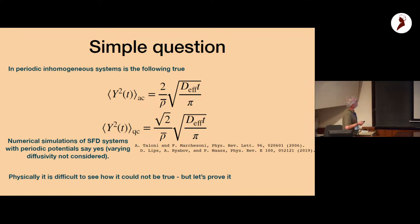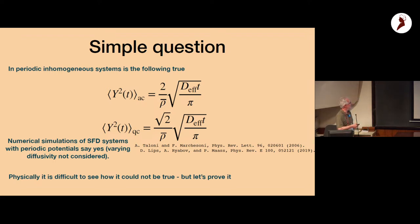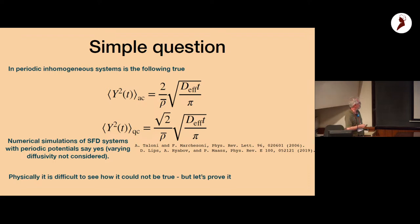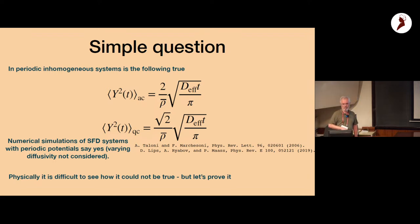Now imagine a system with a periodic potential. People have done simulations of single file diffusion in a periodic potential and find that the variance Y²(t) — the connected part — follows exactly the same results. All you have to do is put in the effective diffusion constant computed from the Lifshitz-Jackson formula in place of D. Physically, it's very difficult to see how this could not be true, but you still have to prove it.